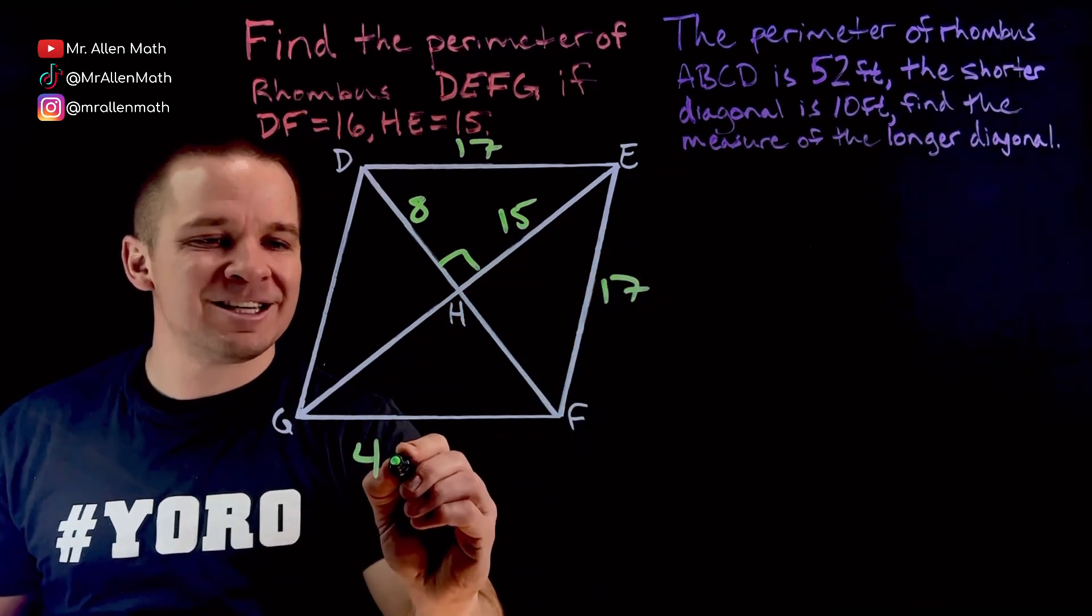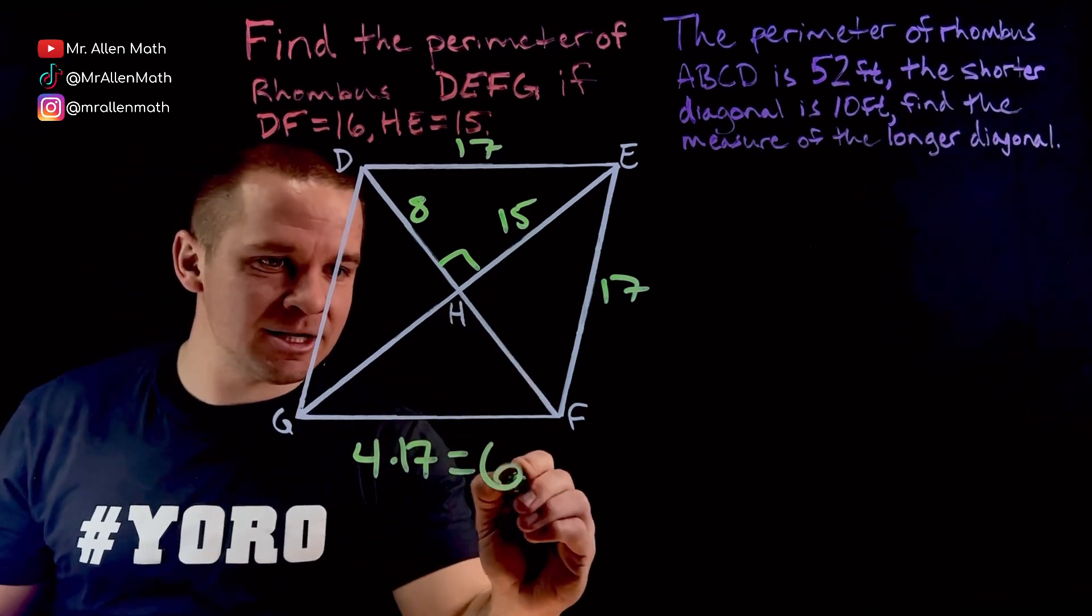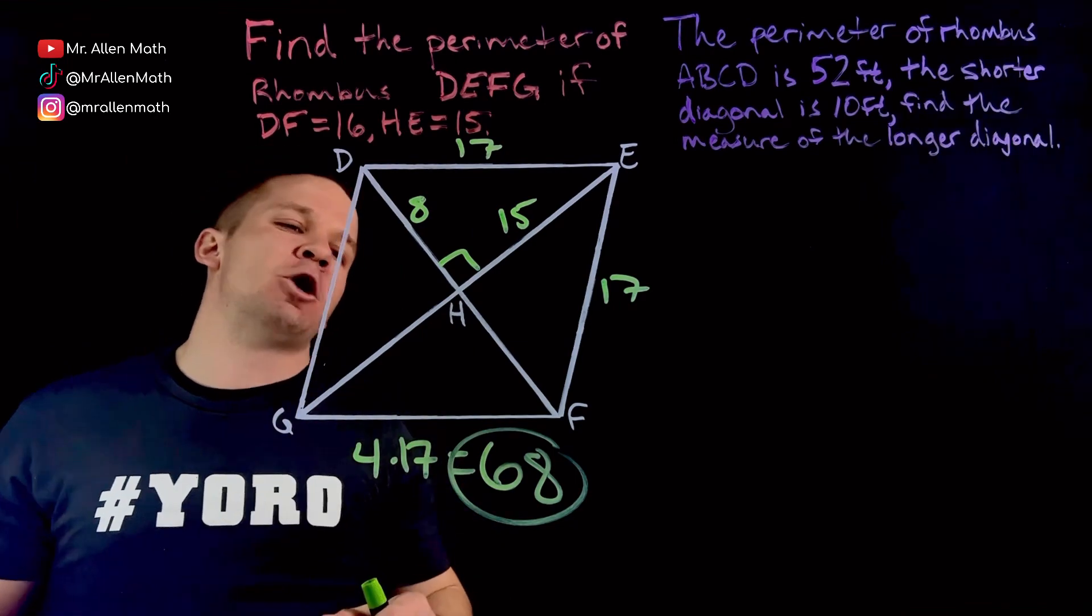You know, let's just do 4 times 17. That's gonna give me 34, 68. 68 for my perimeter of DEFG. That's dope and awesome.